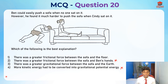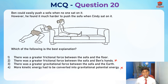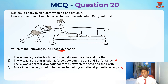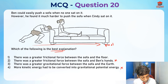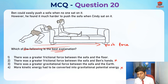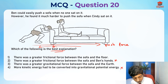So the only two options left are: there was a greater frictional force between the sofa and the floor, or there was a greater gravitational force between the sofa and the earth. Gravitational force does not increase — it remains the same. The question asks for the best explanation, and the best explanation is about friction, because he's pushing the sofa in this direction, so the push force goes this way, but friction opposes motion and goes the other way.